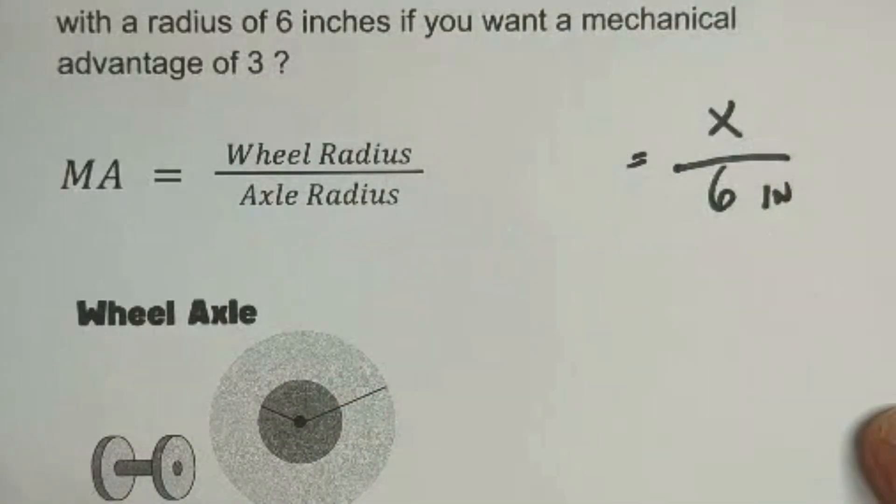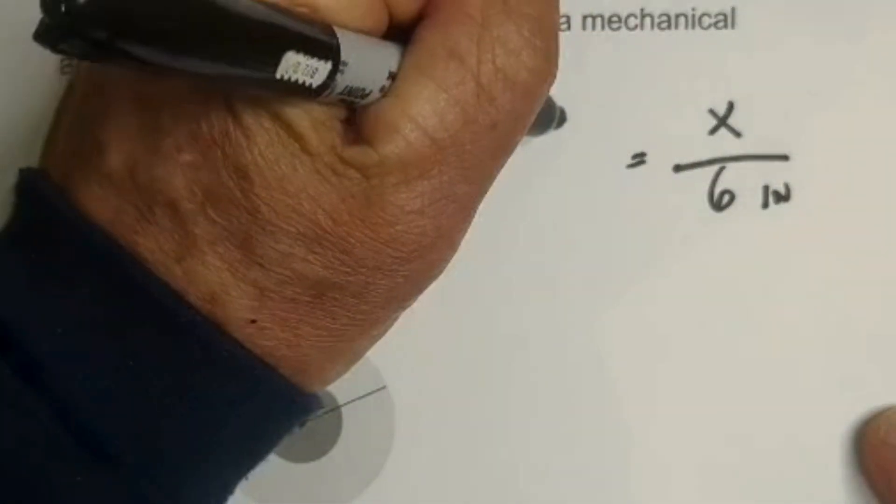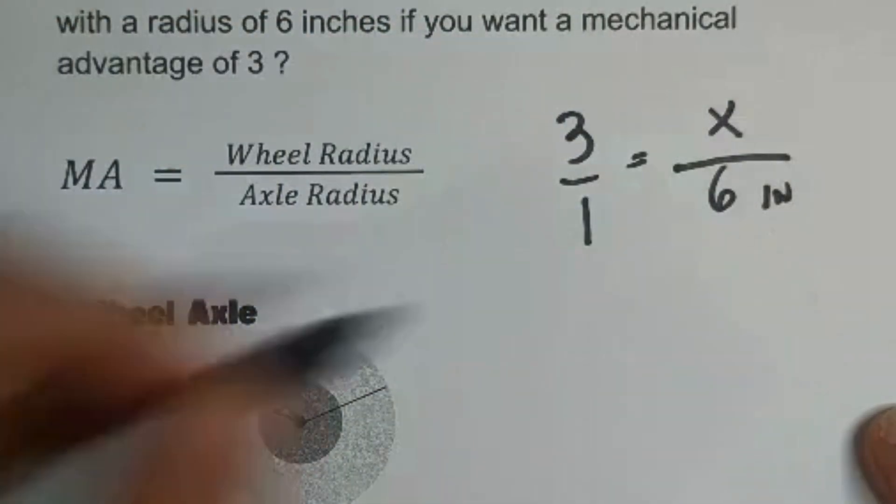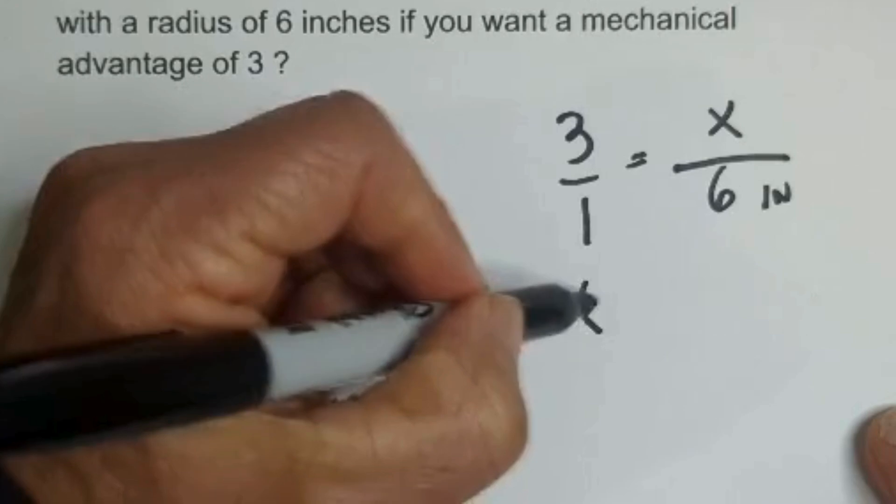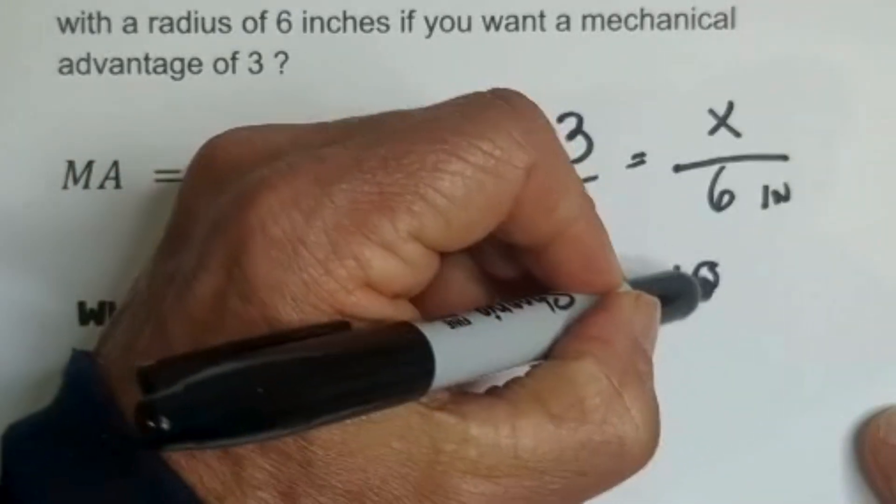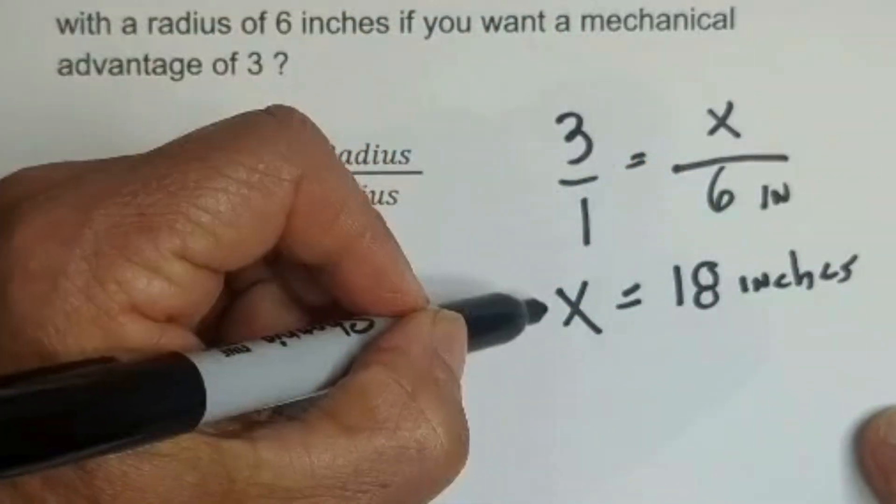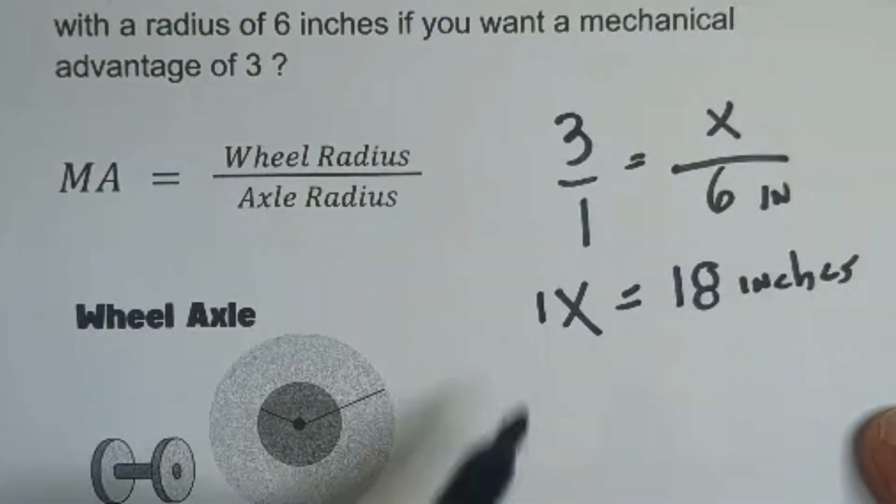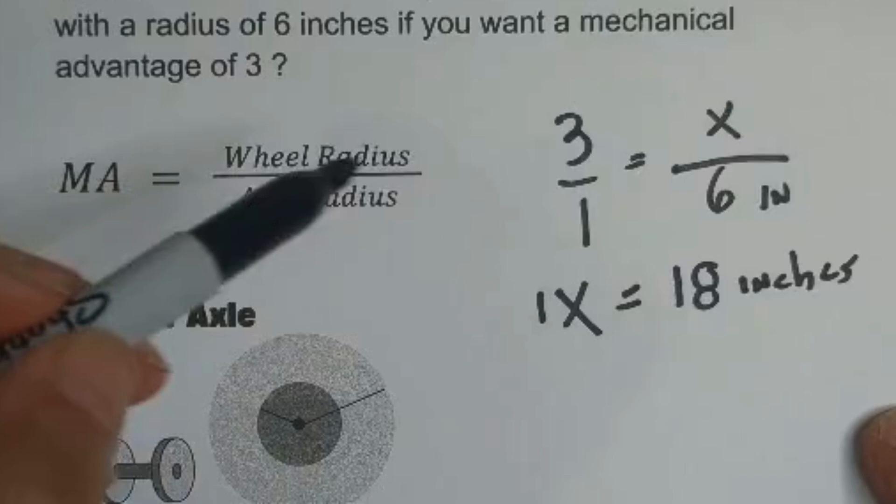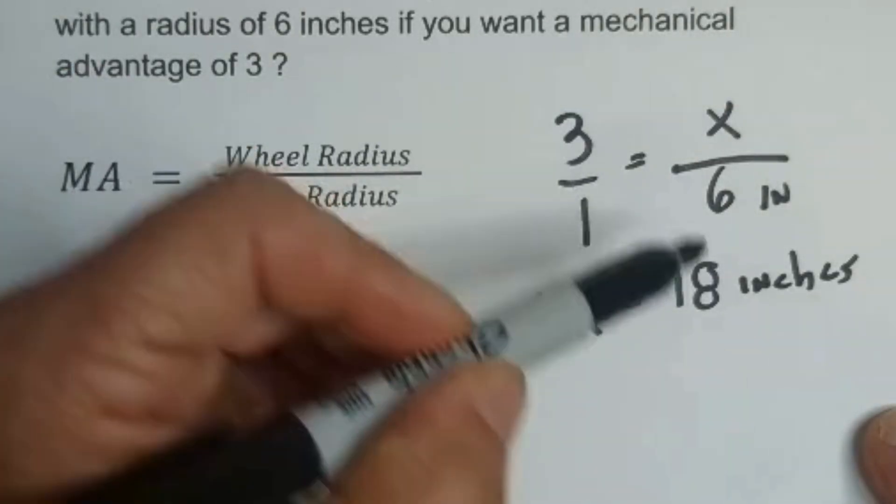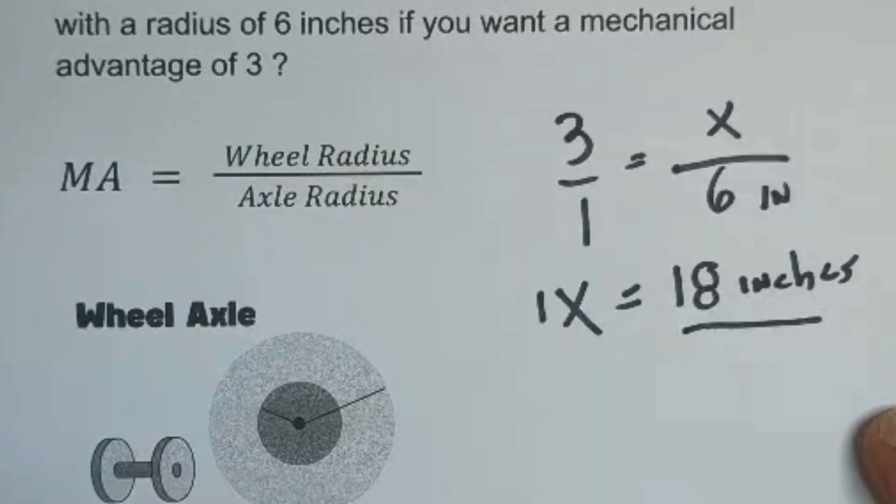Okay, and it has a mechanical advantage of 3. So I'm just going to place 3 over 1. I'm going to cross multiply. x equals 18 inches. Actually, that would be 1x. So we know that if you want a mechanical advantage of 3, the wheel radius needs to be 18 inches. Hope that was helpful.